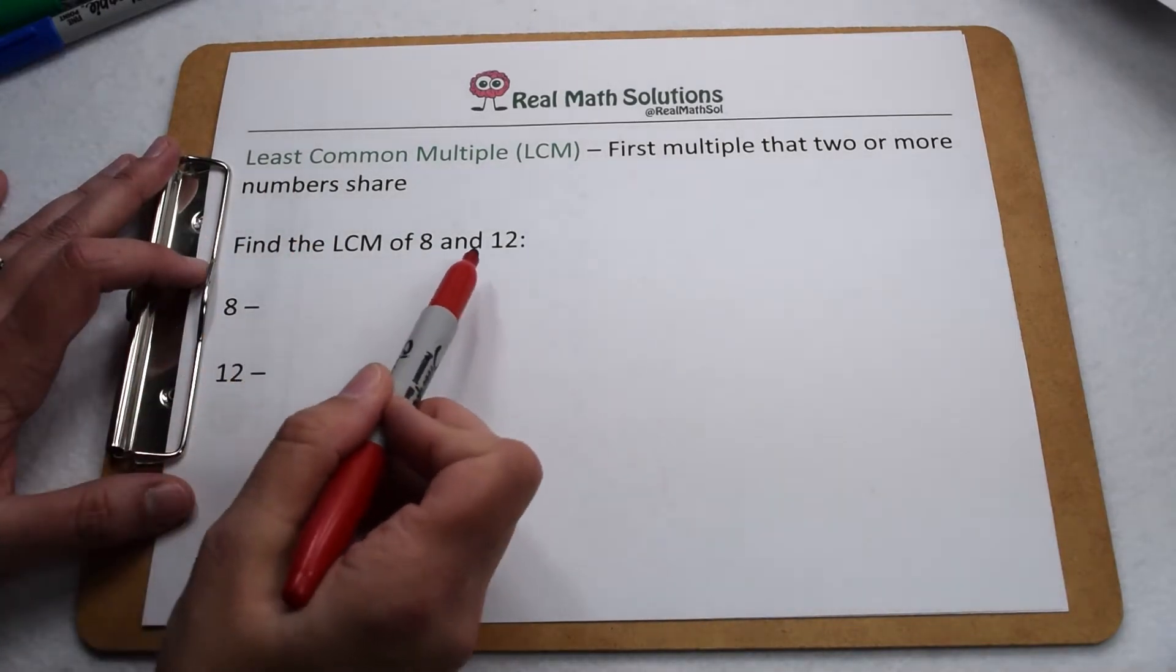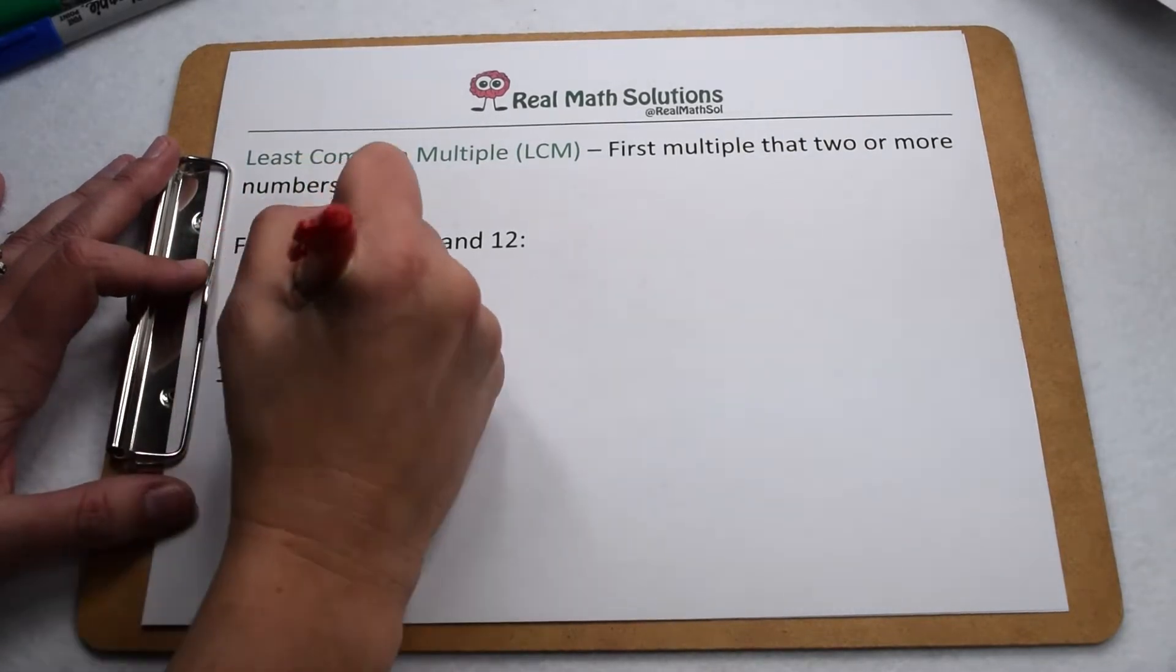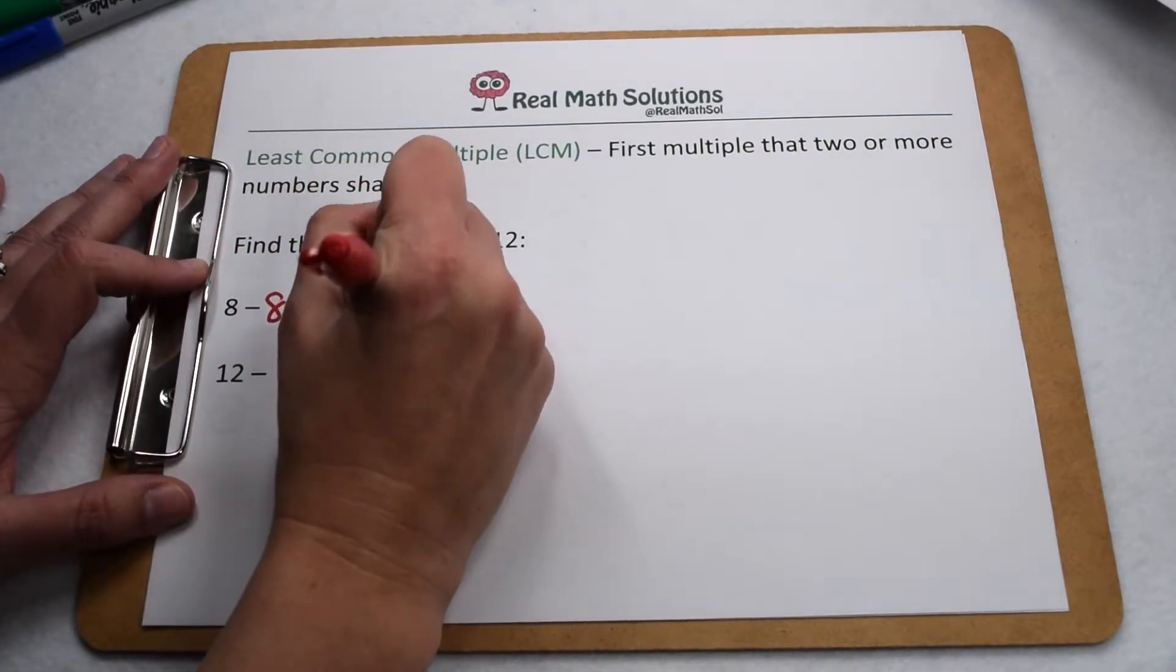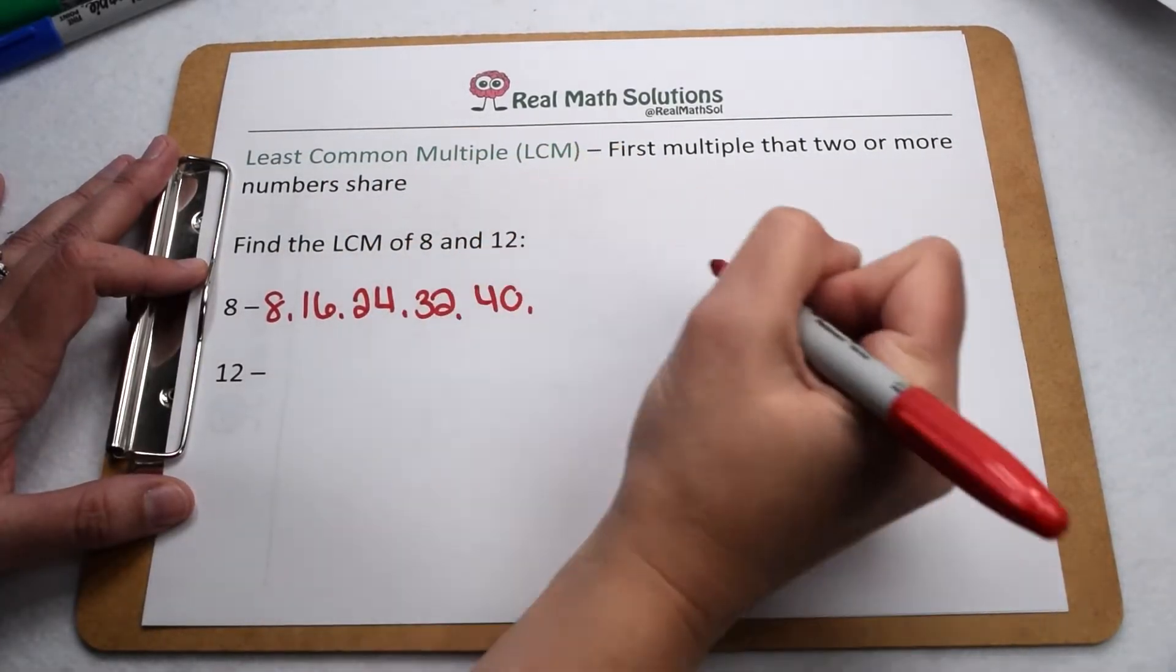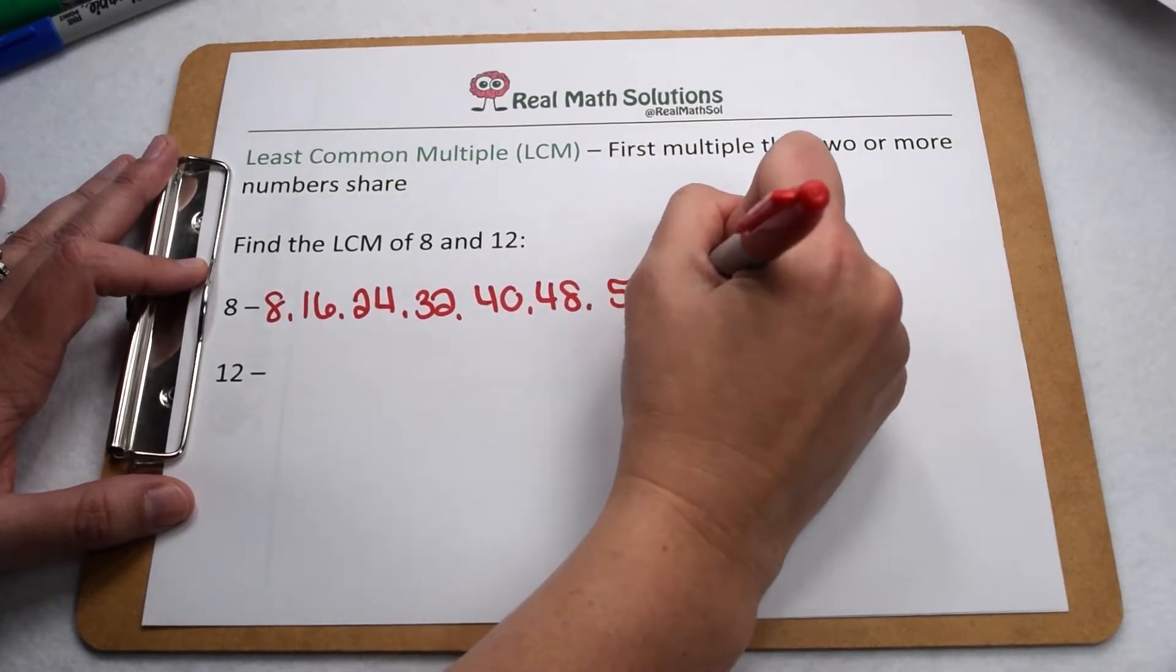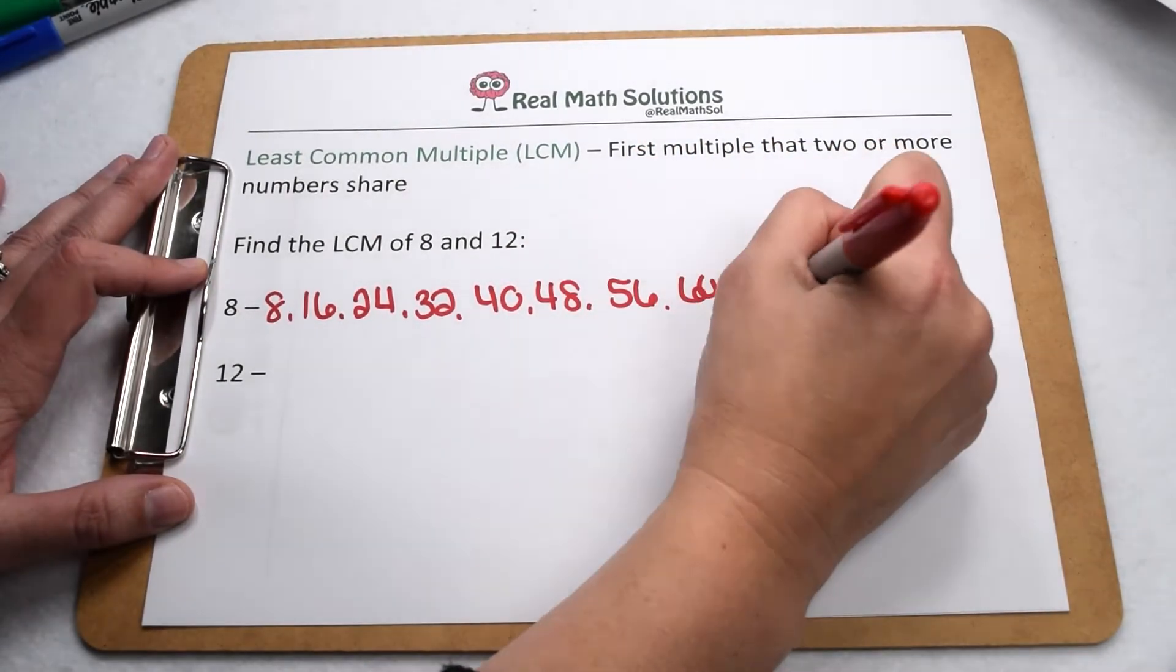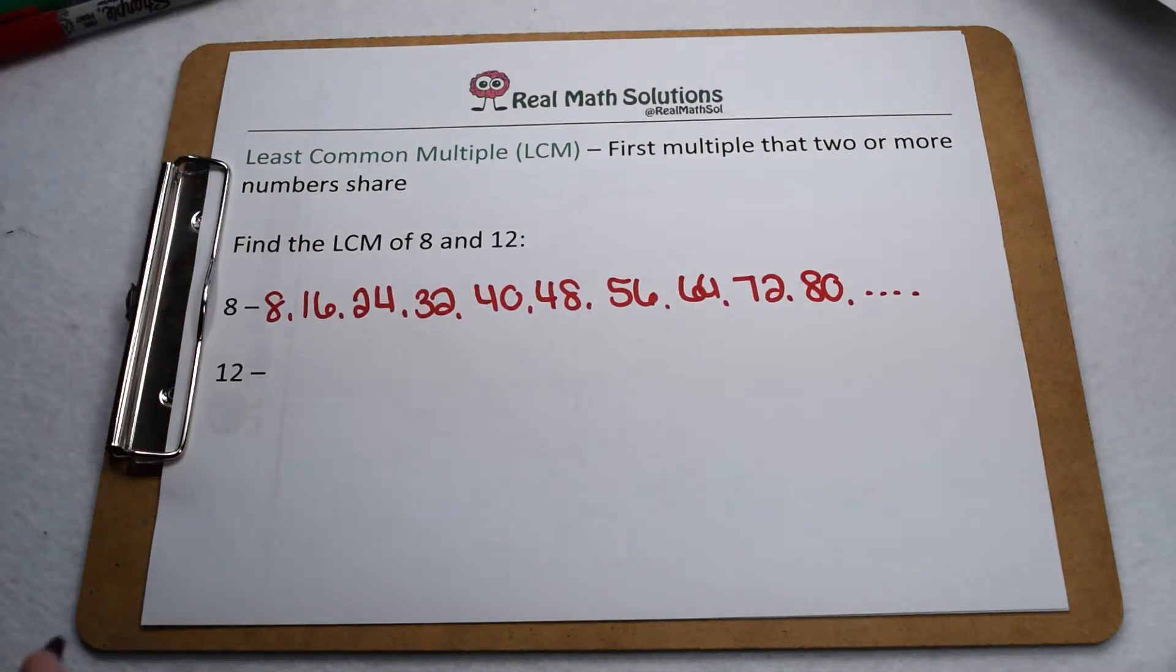So we want to find the least common multiple of 8 and 12. We're going to start by listing out our multiples of 8 and our multiples of 12. Multiples of 8 include 8, 16, 24, 32, 40, 48, 56, 64, 72, and 80. Now we know they go on from there, but that should give us enough to have something in common with 12.